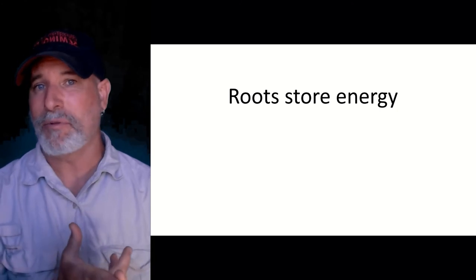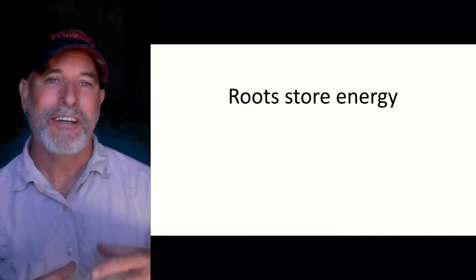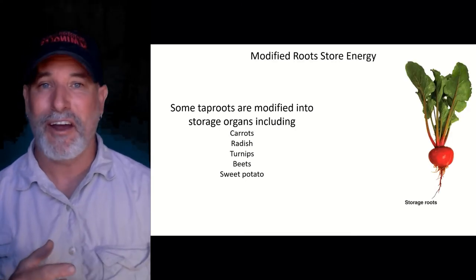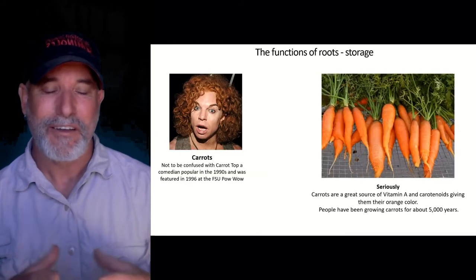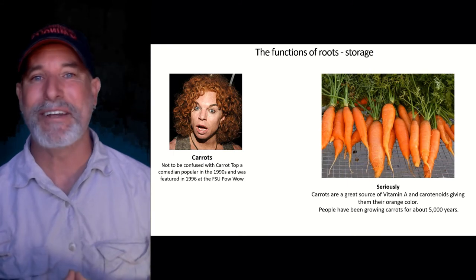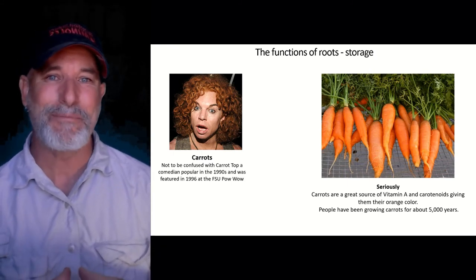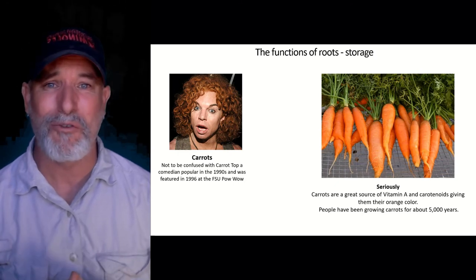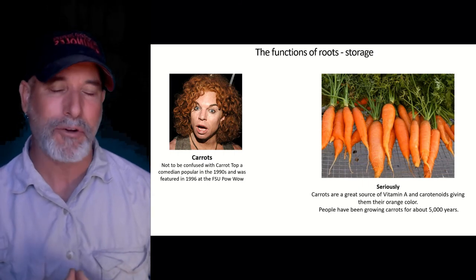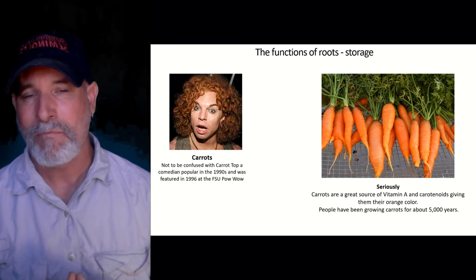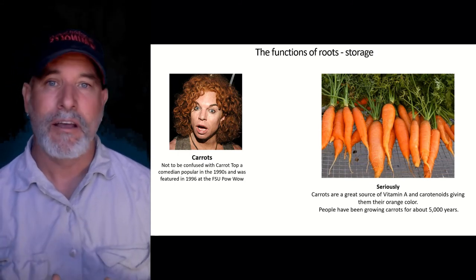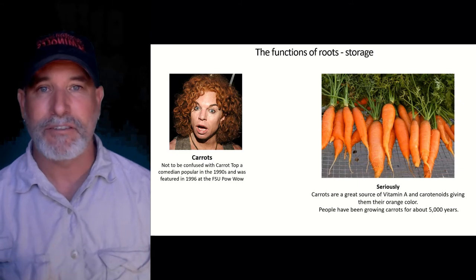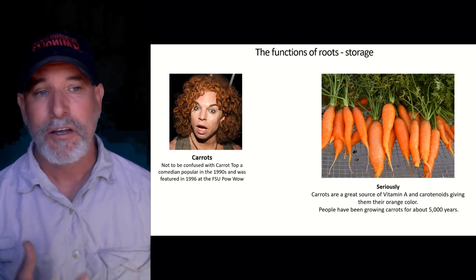In addition to anchoring the plant and absorbing nutrients, roots can also store nutrients. As a plant is growing and the leaves are photosynthesizing, they send nutrients down to certain modified roots like carrots, radishes, and beets. Carrots are modified tap roots used for storage. The orange color comes from carotenoids like beta-carotene, which we can use to make vitamin A — important in early childhood development for good eyesight. In fact, many children go blind every year from vitamin A deficiencies. Beets are really dark colored because of a pigment called anthocyanin, the same as in blueberries — very healthy for you.